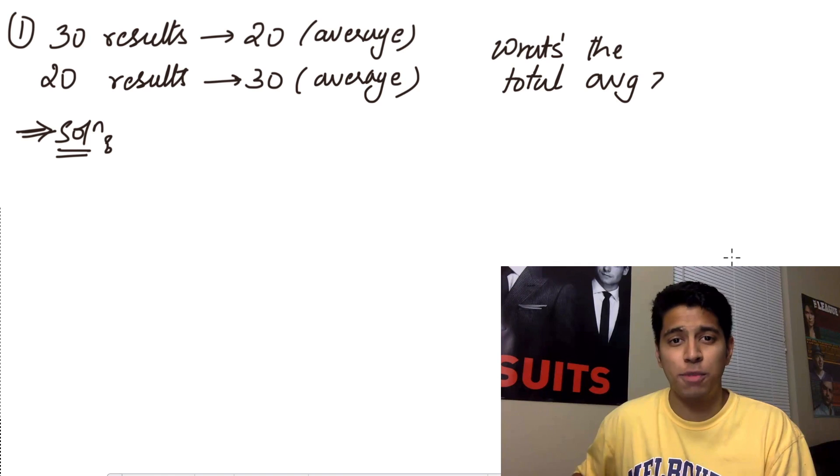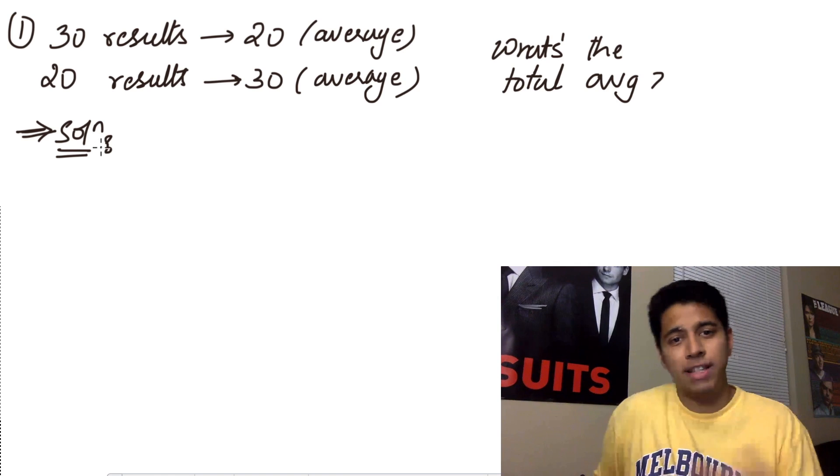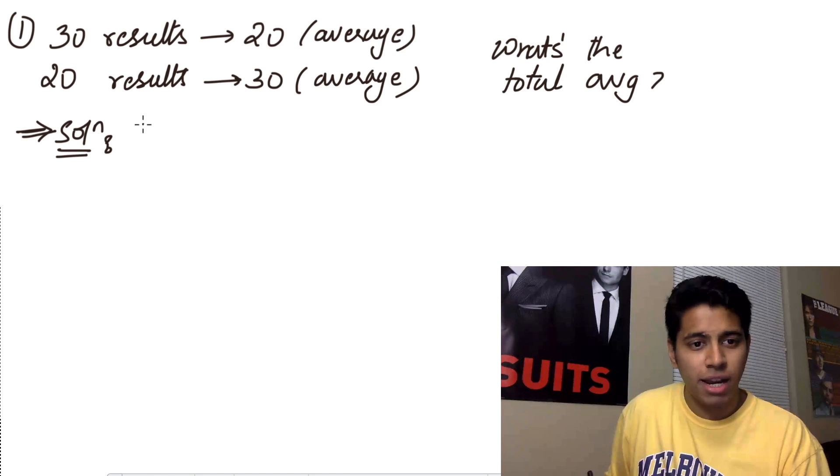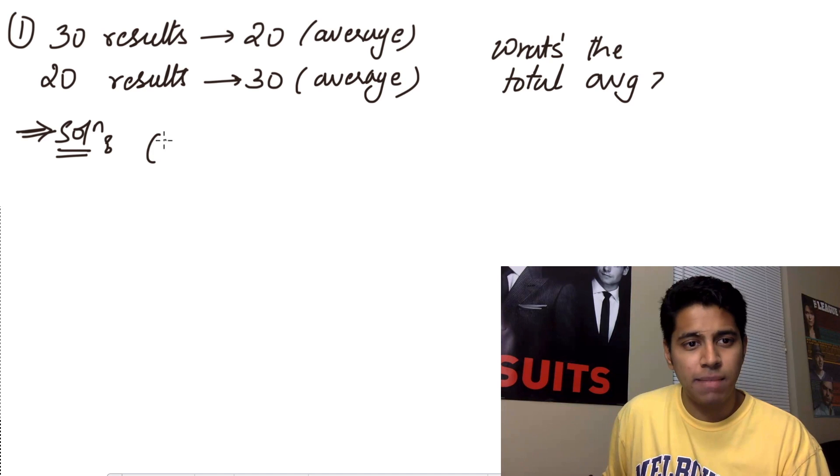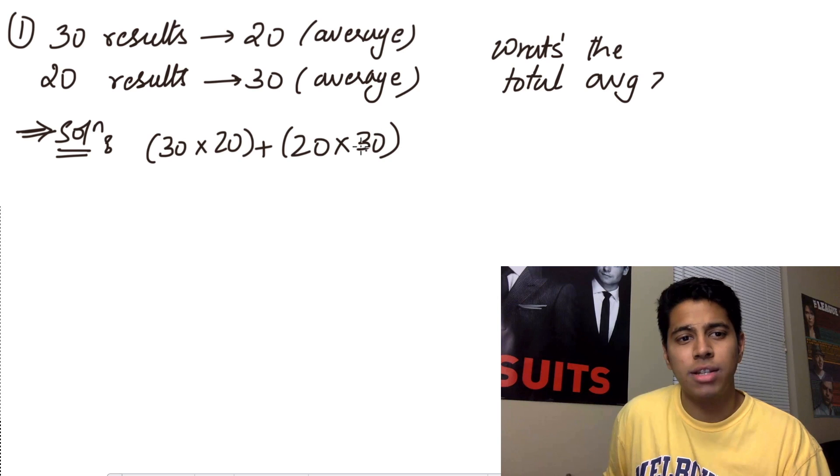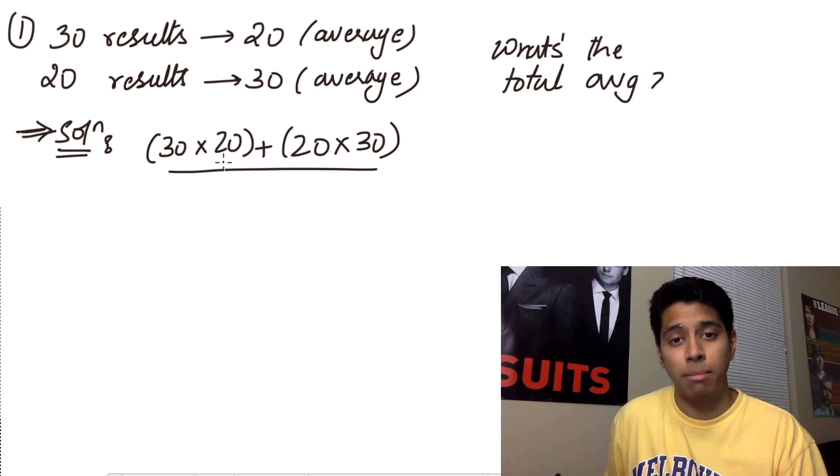Now if you watched the first video this should be quite easy to solve. You just have to find the sum again divided by the total number and you have your average. So we'll solve this easily. This will be 30 into 20 plus 20 into 30. This is just the number into the average divided by the total number.